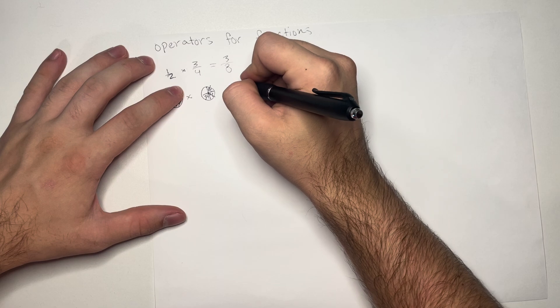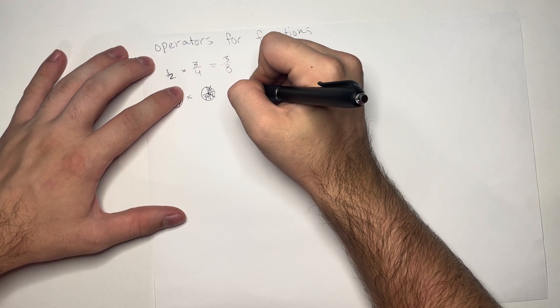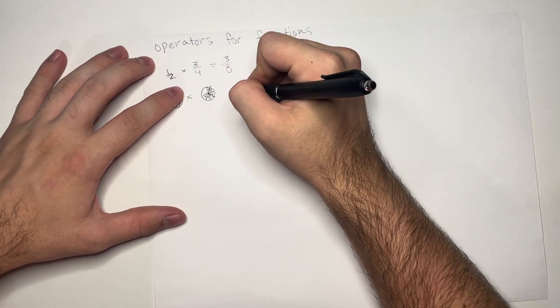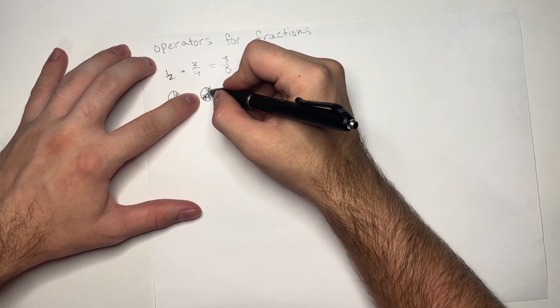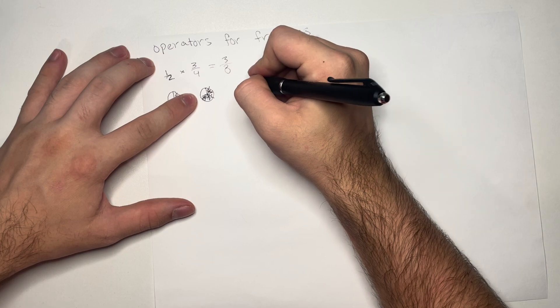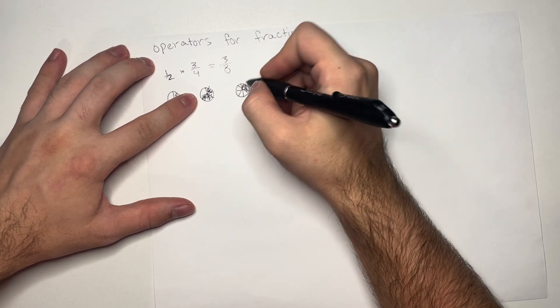And now, we take half of those. So, 1, 2, 3. So, we end up with 3 over 8.